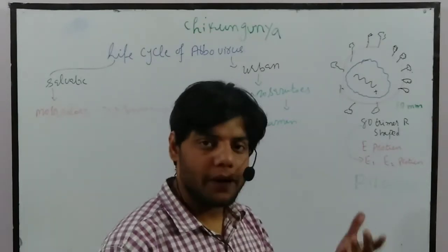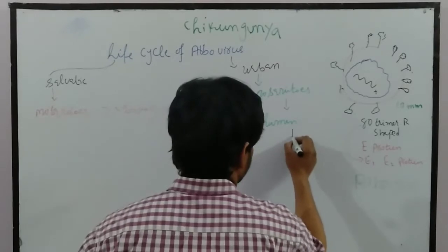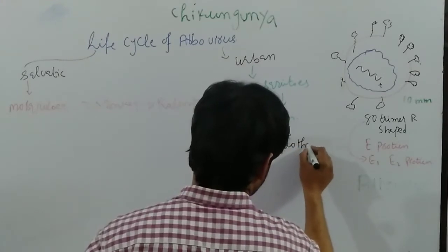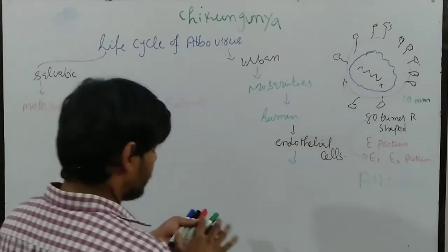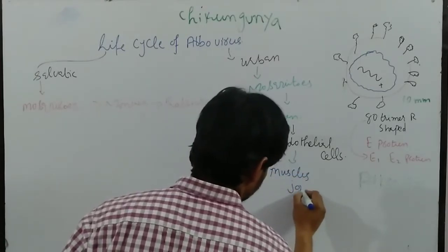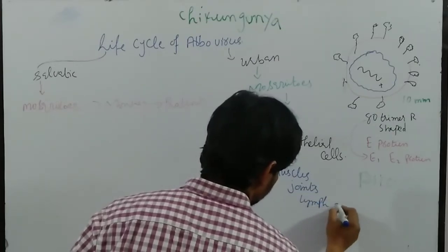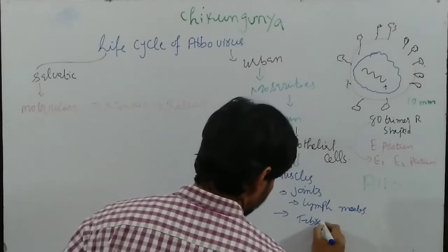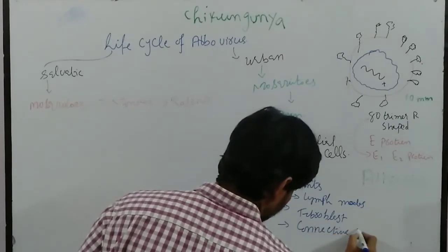At the urban area, the mosquitoes survive and bite the human. Once they bite the human, the viruses replicate inside the human in the epithelial cells. After that, they replicate inside the endothelial cells of the muscles, joints, lymph nodes, and fibroblast connective tissue.